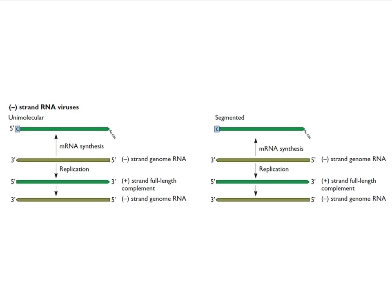Let's look at negative strand RNA viruses — both negative and double strand. For negative strand viruses, there are viruses with one RNA and viruses with segmented RNAs, and the scheme is pretty much similar. The negative strand comes in and it has to come in with a polymerase so it can be copied to form mRNAs.